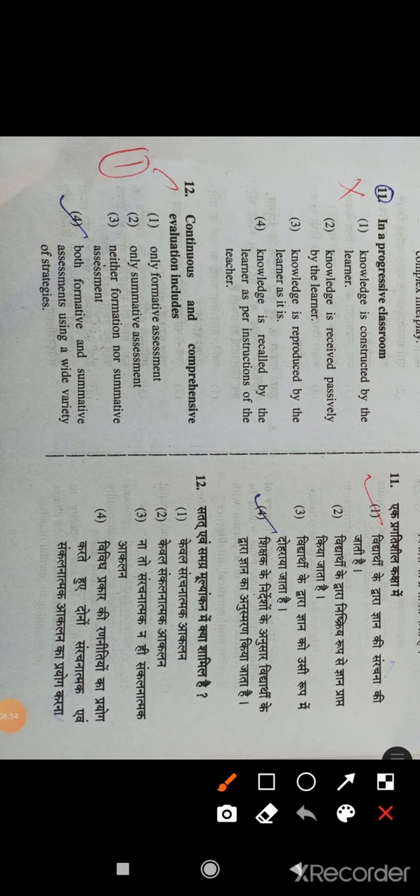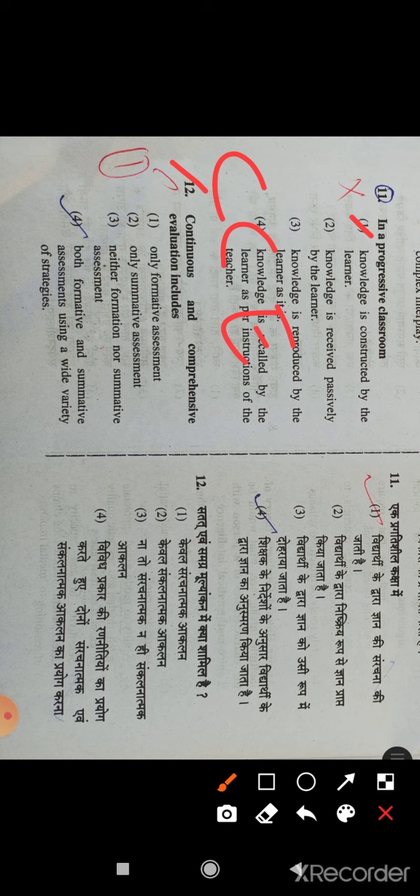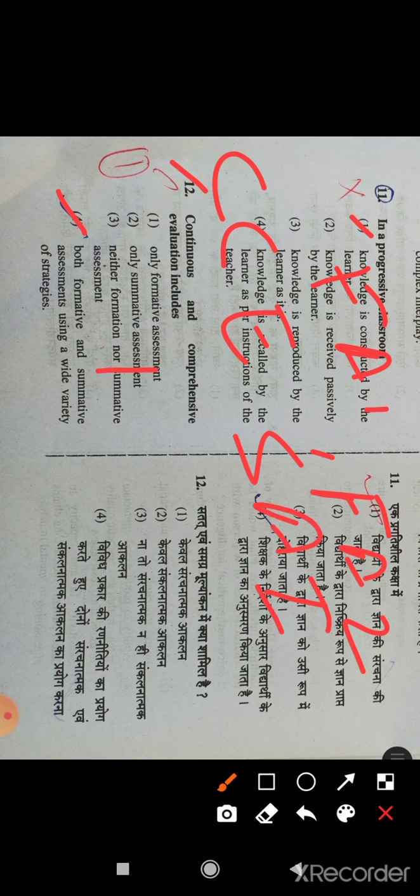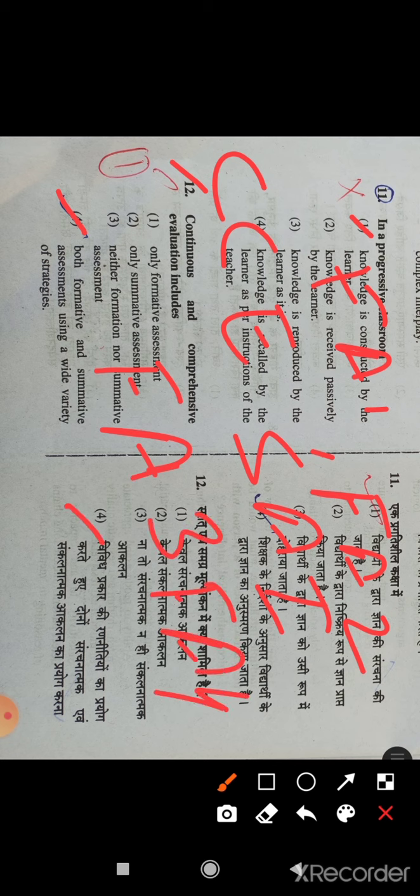Question number 11: In a progressive classroom, knowledge is constructed by the learner. Option 4: Both formative and summative assessment using a wide variety of strategies. Earlier we had F.A.1, F.A.2, F.A.3, F.A.4 - formative assessment, and S.A.1, S.A.2 - summative assessment. So this is the fourth right answer.